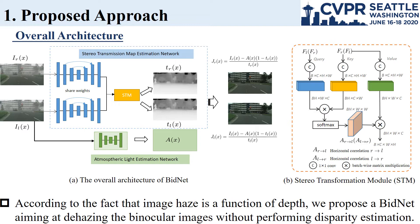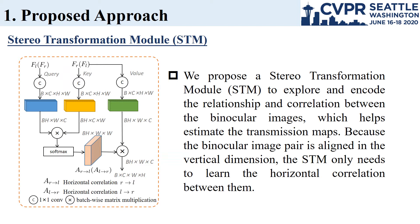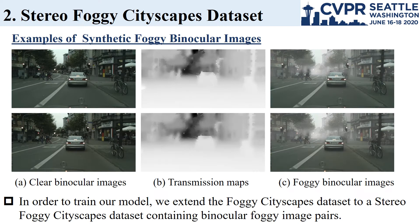According to the fact that image haze is a function of depth, we propose Bid Net, aiming at dehazing binocular images without performing disparity estimation. We propose a stereo transformation module to explore and encode the relationship and correlation between the binocular images, which helps estimate the transmission maps. In order to evaluate our module, we extend the foggy cityscapes dataset to a stereo foggy cityscapes dataset.